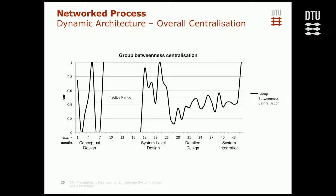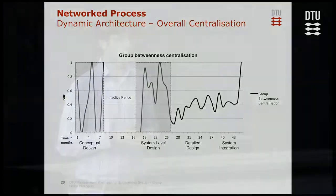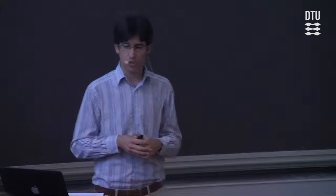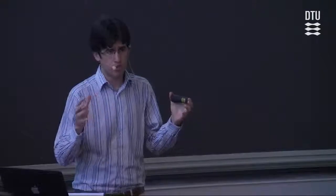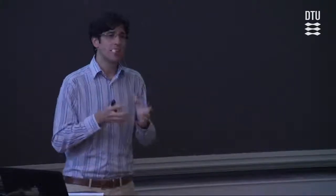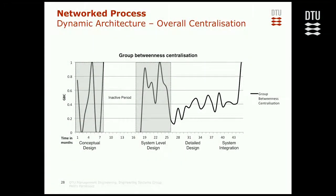Looking at the actual patterns, through the framework's methodological part I propose measuring this through group betweenness and centralization. In the stages of conceptual design and system-level design, we see higher levels of centralization, which sounds about right. Conceptual design in this particular case was a stage with not so many activities going on, so there is some variation, but overall it was high. Then when we move to detail design, there is a sharp decrease in overall information centralization — coinciding with what we expected.